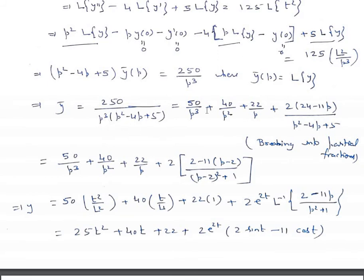Now break into partial fractions. We have 50/p³ + 40/p² + 22/p + [2(24 - 11p)]/(p² - 4p + 5). This last term can be written as 2[-(11)(p-2)]/(p-2)² + 1. Taking inverse Laplace: y = 50·t²/2! + 40·t + 22 + 2·e^(2t)·L⁻¹{(2 - 11p)/(p² + 1)}.